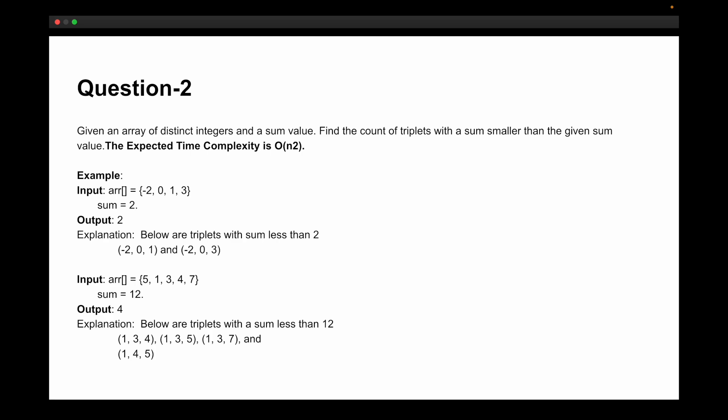The second coding question was: you are given an array of distinct integers and a sum value, and you have to find the count of triplets with a sum smaller than the given sum value. The time complexity of your solution should be O(n²). An example with input array, sum, and expected output is shown so you can understand the problem better.